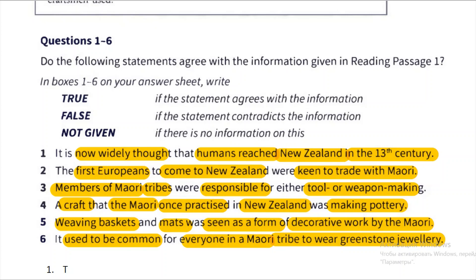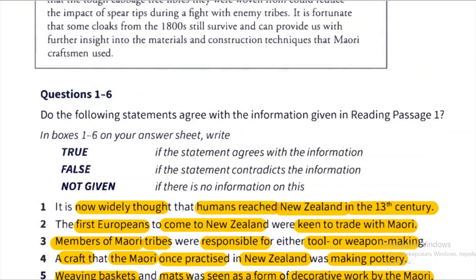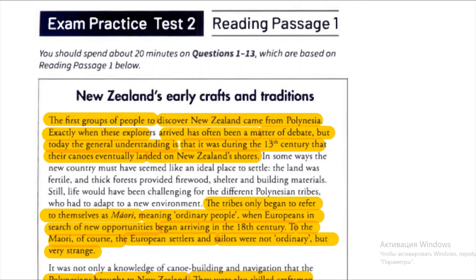The first statement is: 'It is now widely taught that humans reached New Zealand in the 13th century.' Can you see the phrase 'widely taught'? This answer will be found in the first paragraph. This is TRUE information, so we need to go to the first paragraph to see how we found this information.